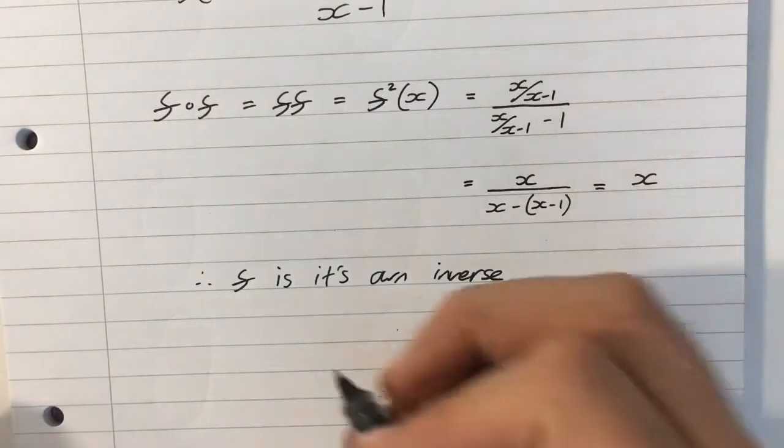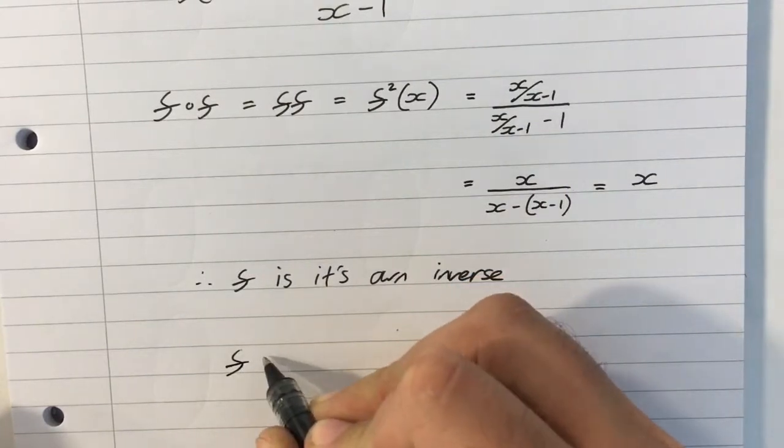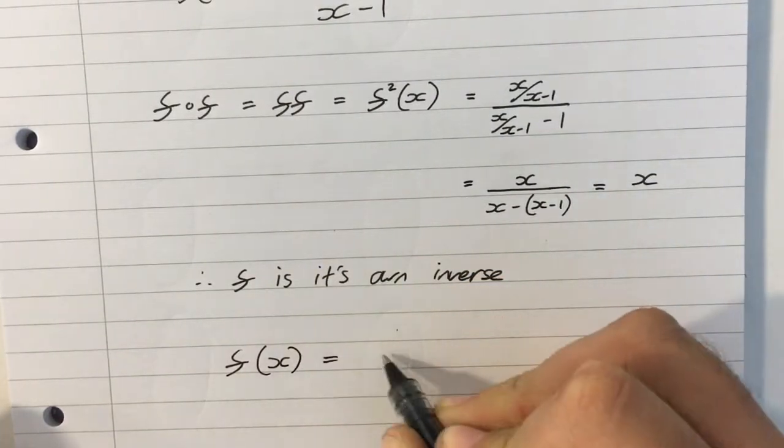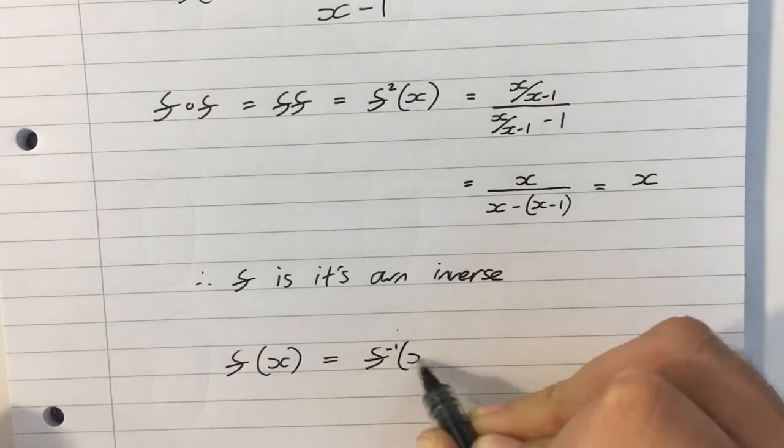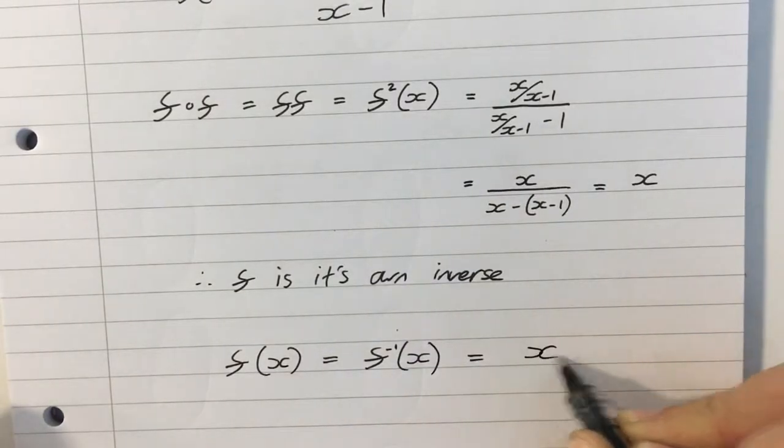But f is its own inverse, which means f of x equals f to the minus 1 of x, which was x over x minus 1.